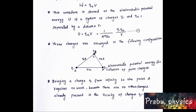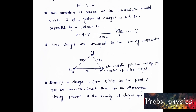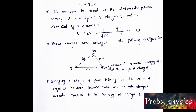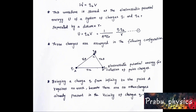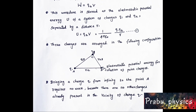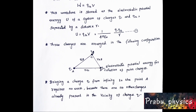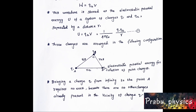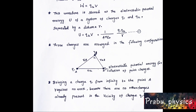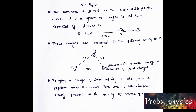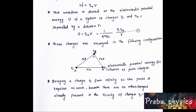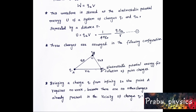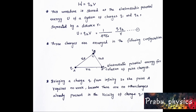Three charges q1, q2, and q3 are arranged. The distance between q1 and q2 is R12. The distance between q2 and q3 is R23. The distance between q3 and q1 is R13. Bringing charge Q1 from infinity to point A requires no work because there are no other charges already present in the vicinity.